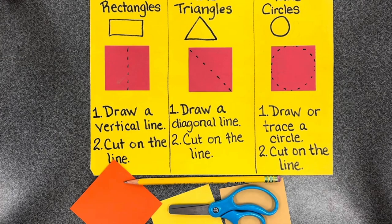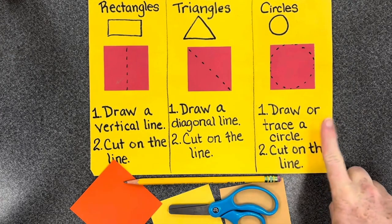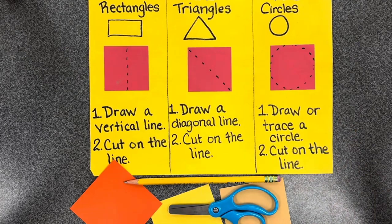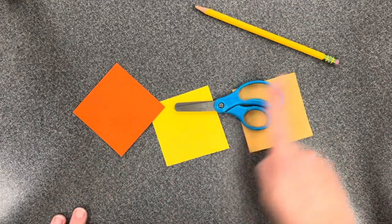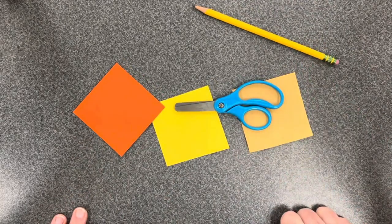There will be a reference sheet at your table so that you have a visual reminder of how to follow these steps after the video. We'll start with a rectangle. You will need some squares, a pair of scissors, and a pencil for today's activity.